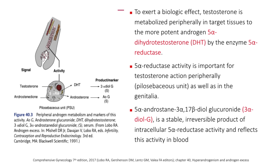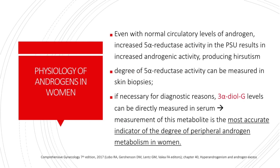5-alpha-androstandiol-3-alpha-17-beta-diol glucuronide, or 3-alpha-diol-G, is a stable, irreversible product of intracellular 5-alpha-reductase activity and reflects this activity in the blood. Even with normal circulatory levels of androgen, increased 5-alpha-reductase activity in the PSU results in increased androgenic activity, thereby producing hirsutism. The degree of 5-alpha-reductase activity can be measured in skin biopsies. If necessary for diagnostic reasons, 3-alpha-diol-G levels can be directly measured in the serum. Measurement of this metabolite is the most accurate indicator of the degree of peripheral androgen metabolism among women.